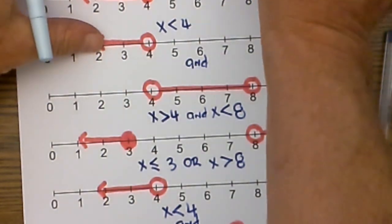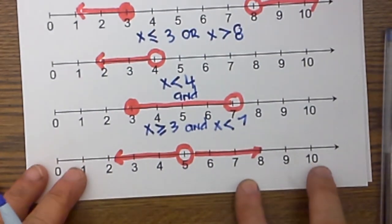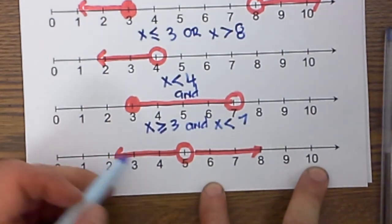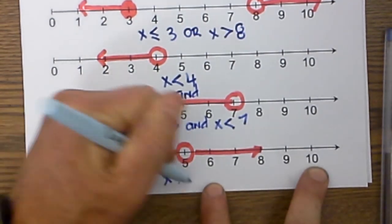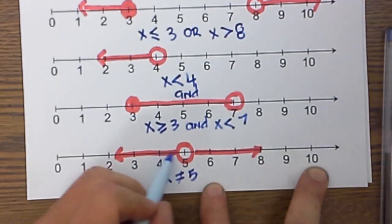And finally, what do we do with an example like this? We have this example. This is one you may not have seen before, but this is x is not equal to 5. That means it can be every other number except 5.